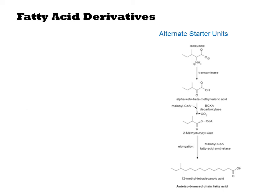However, there are other types of things that can happen that do not allow you to black box fatty acid biosynthesis. Here, the amino acid isoleucine is converted to a CoA thioester which replaces acetyl-CoA as the initiating unit for the synthase. The resulting product has a branch structure at the end resulting from the amino acid's incorporation.